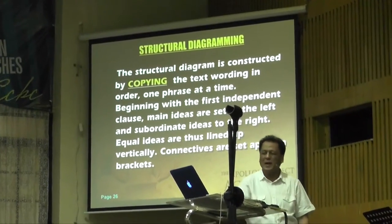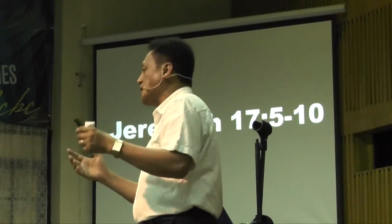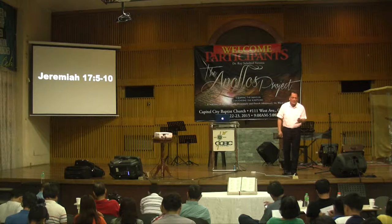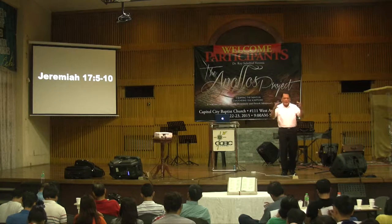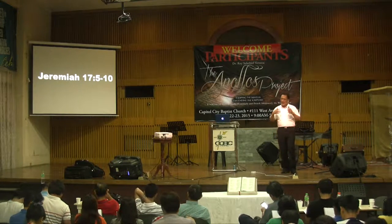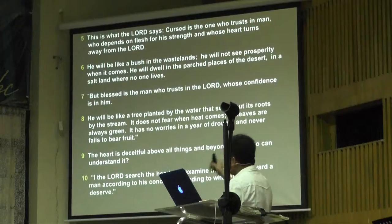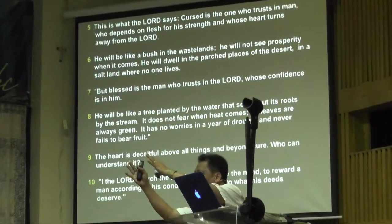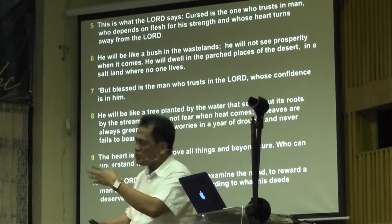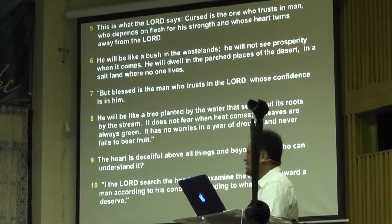We'll do this by copying the text wording in order, one phrase at a time. Let's use Jeremiah 17:5-10 as an example. Look at that passage in your Bibles — what type of material is it, prose or poetry? On the board, we're going to separate the structural diagram: main subject on the left, descriptions on the right. It takes practice — do this as often as you can when preparing your Sunday school lesson, Bible study, or sermon. This will help a lot with outlining.